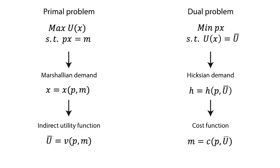On the other hand, if we substitute the optimal variables in the dual problem, we obtain the cost function, being this function m, that specifies cost as a function of prices and utility.